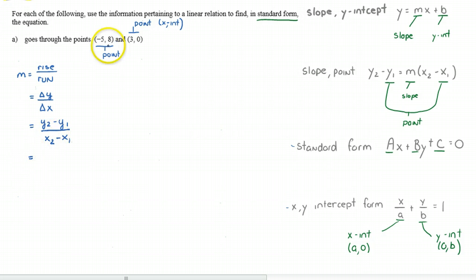So, if we now take our points, let's use this point here as x1, y1, and this point here as x2, y2. So we're going to have 0 minus 8 over 3 minus negative 5. Watch that double negative, which is going to give me negative 8 over 3 minus negative 5, which is 3 plus 5, giving me 8. And that reduces to minus 1. So therefore, m is equal to minus 1.